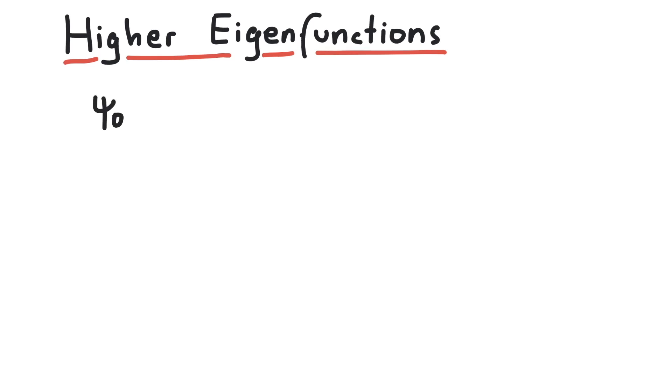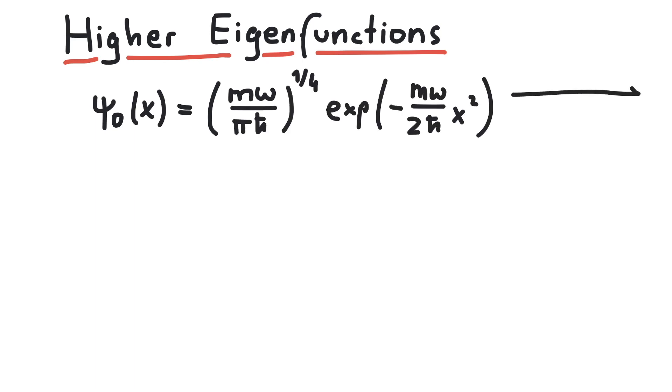Last time, we calculated the ground state of the harmonic oscillator in position space, which was basically a Gaussian curve with some fancy coefficients.